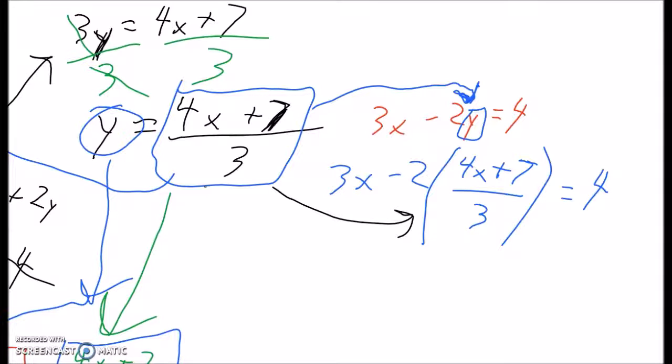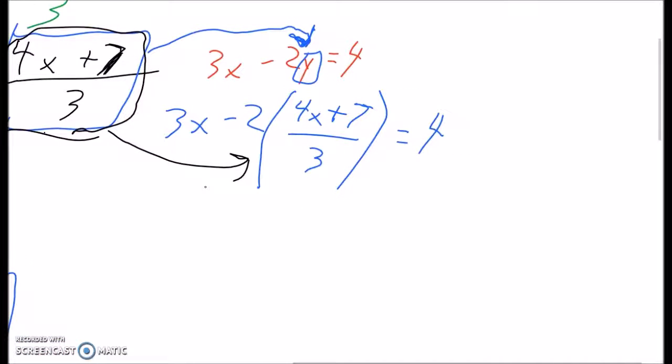So, all I did was instead of writing y here, right beside the 2, I wrote this entire expression because this entire expression is equal to y. So, now we have, again, a double binomial. You have two variables, or two x's in here, but it's only one variable. It's only one x. So you could start multiplying this out, and we'll try doing that for now. 3x minus 2. That 2, I'm going to multiply that into the brackets. So actually, instead of writing 2, I'm going to write 8x plus 14 over 3 equals 4.